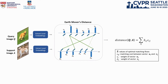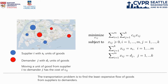Given the local feature representation sets generated by two images, we use the Earth Mover's Distance to compute their structural similarity. The EMD can acquire the optimal matching flows between two structures that have the minimum overall distance. It can also be interpreted as the minimum cost to reconstruct a structured representation against the other one. The EMD has a formulation of the transportation problem, and the global minimum can be obtained by solving a convex linear programming problem.